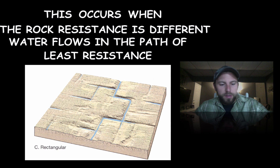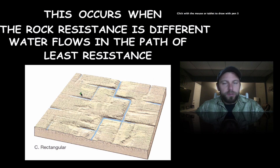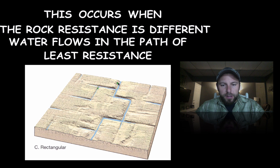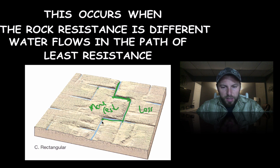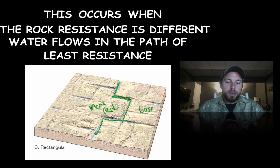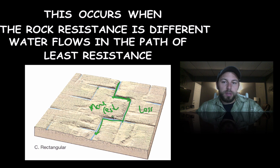The rectangular pattern is interesting — here we have different resistance of bedrock in the area, so the water just finds the path of least resistance. This section might be more resistant and this one less, so the water hits the more resistant rock and goes around it. It keeps making its way around the more resistant rock, cutting through the least resistant.